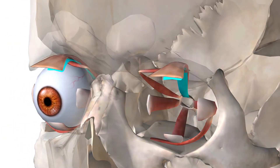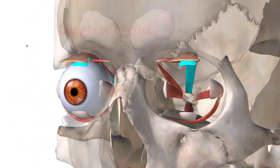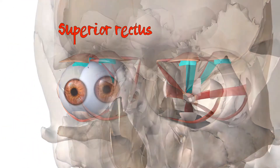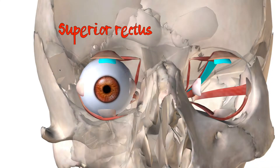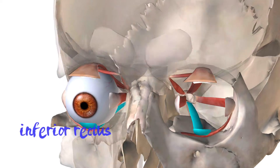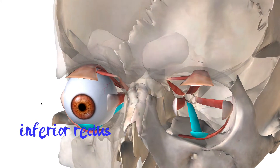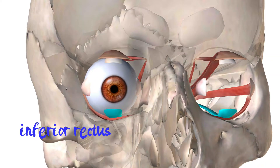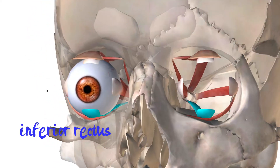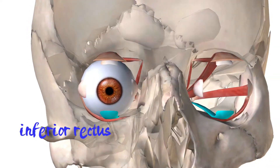The first one is your superior rectus. With the superior rectus, as it contracts it helps you to look upward, to look superiorly. Then you can predict the inferior rectus — when this muscle contracts it helps you to look inferiorly, look downward. So your gaze goes down.